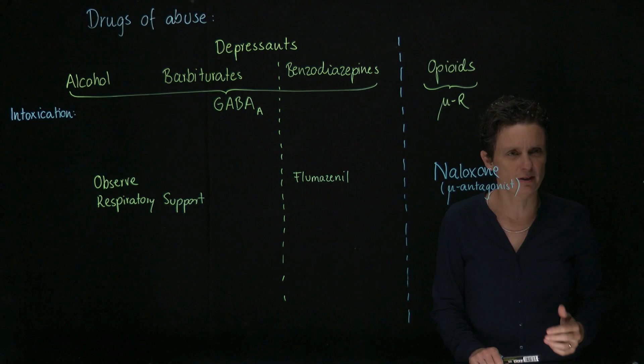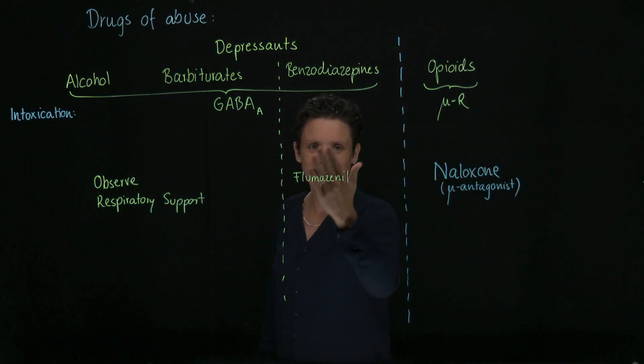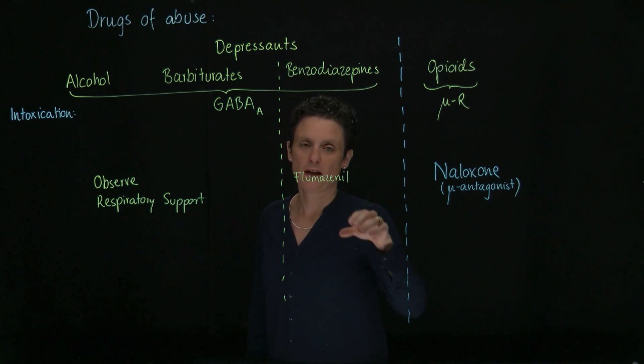This is a mu antagonist, directly antagonizing the mu receptor. I should also mention flumazenil is a direct antagonist at the benzodiazepine receptor's binding site.